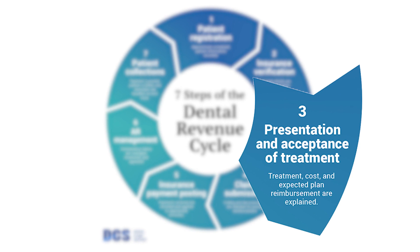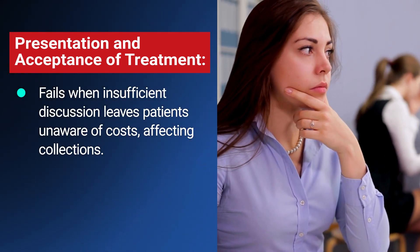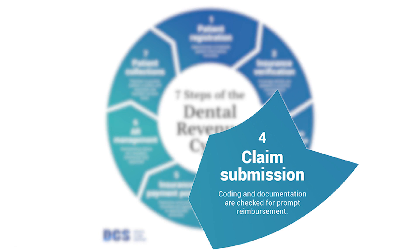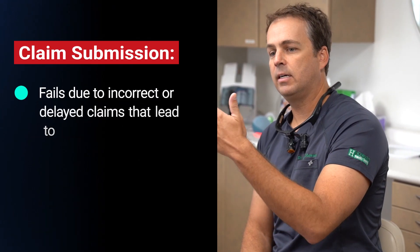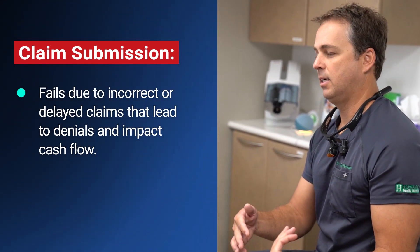Number 3 is presentation and acceptance of treatment. Discussing treatment plans and costs upfront avoids surprises and ensures patient agreement. This step fails when insufficient discussion leaves patients unaware of costs, affecting collections. Number 4 is claim submission. Accurate coding and documentation are vital for clean claim creation and swift reimbursements. This step fails due to incorrect or delayed claims that lead to denials and impact cash flow.